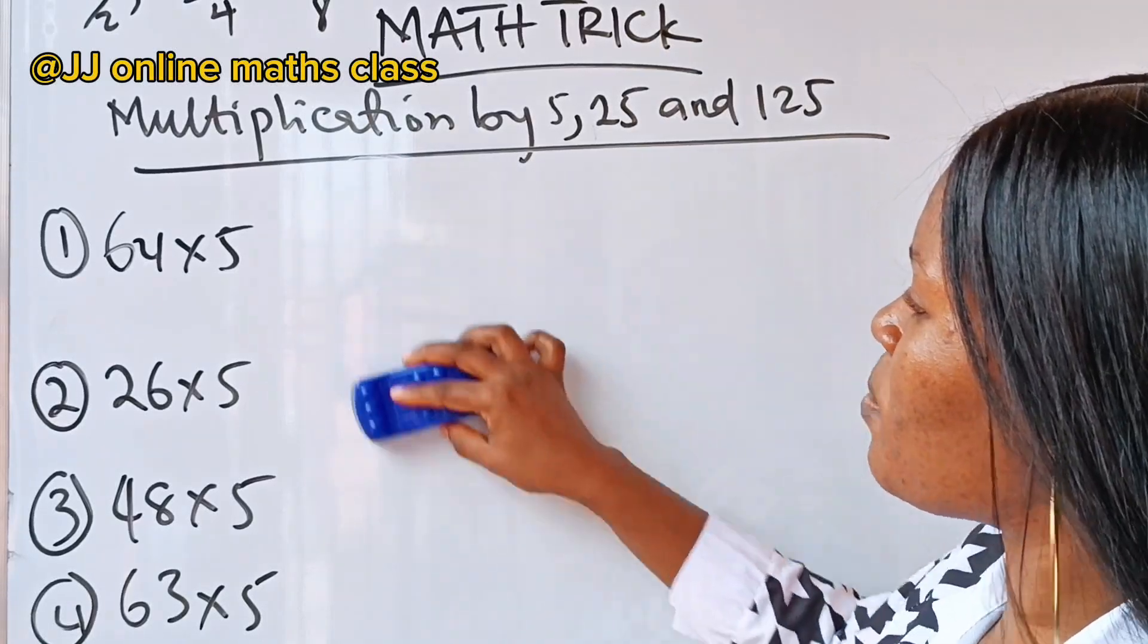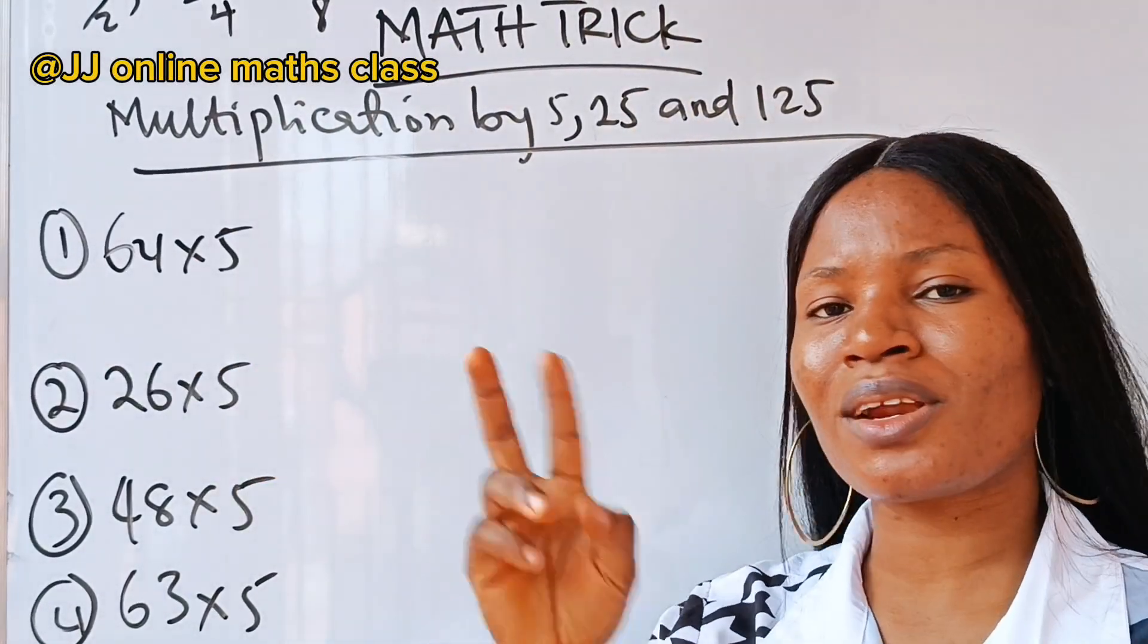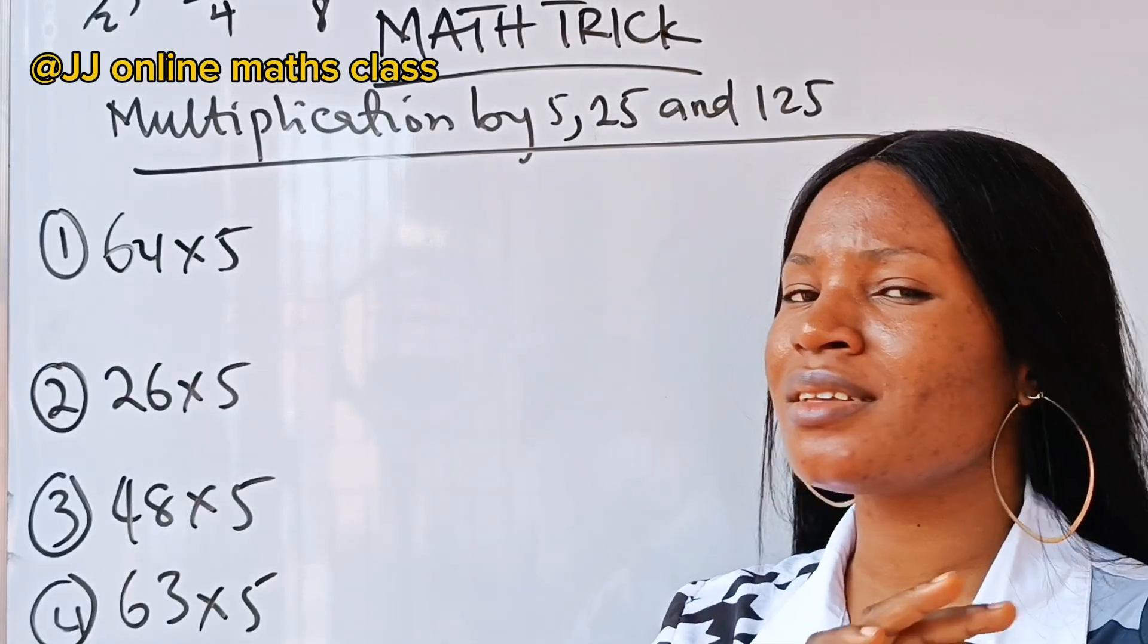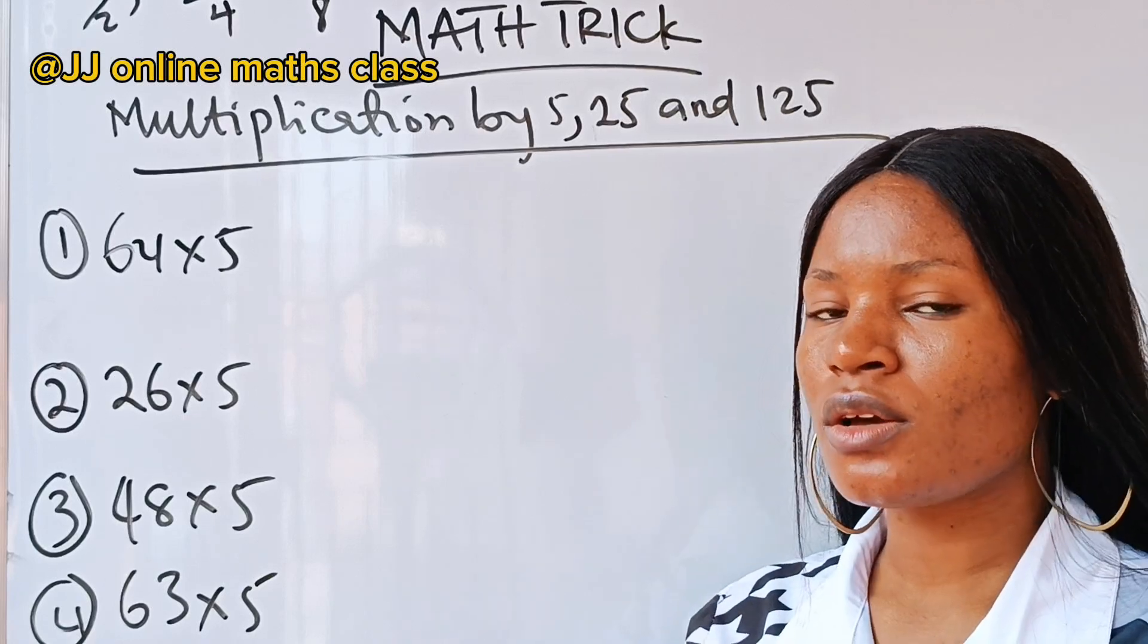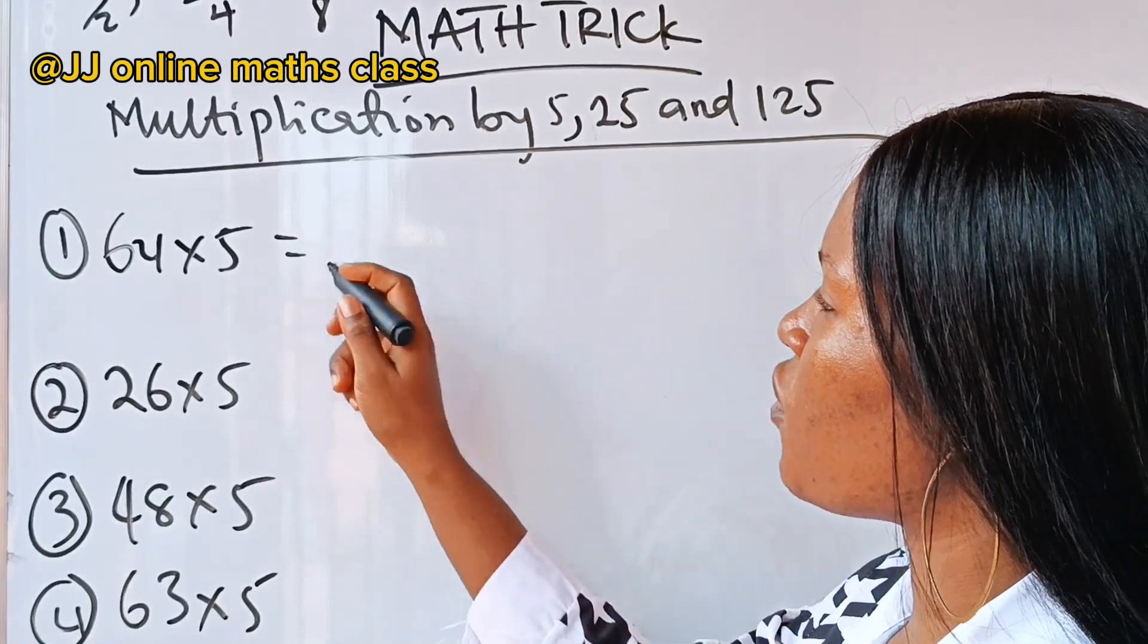So, if you are asked to multiply 64 by 5, you can use this method for 3-digit number, 4-digit number, any digit number. But I am going to use mostly 2, and highest maybe 3, to just make the video not too long.